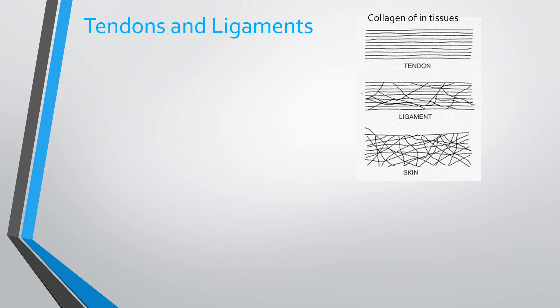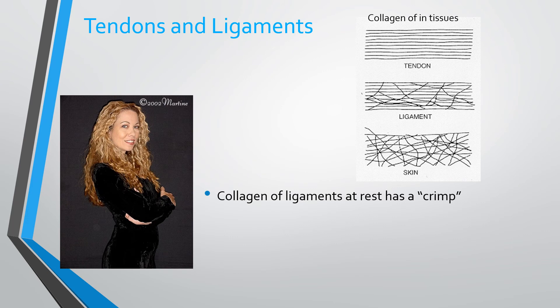Tendons have a much lower proportion of elastin relative to collagen compared to ligaments. This makes sense because tendons attach to muscles, which are very elastic by construction. Ligaments connect bones and have no tensile stress-absorbing mechanism, so ligaments have what is called a crimp — a waviness visible in electron micrographs of ligamentous tissue — which is maintained by elastin.